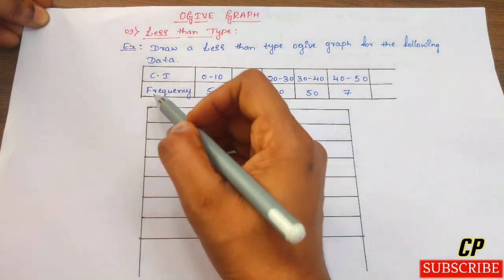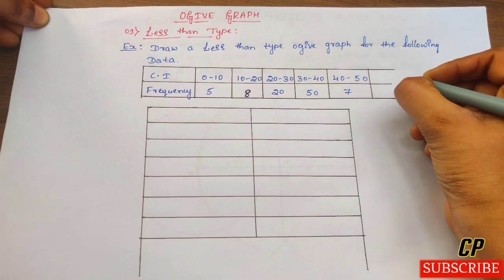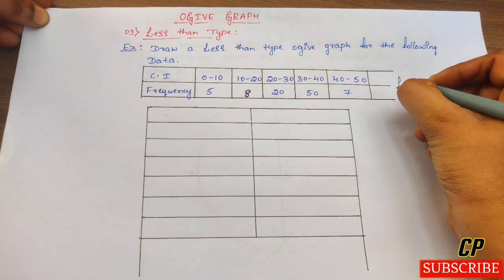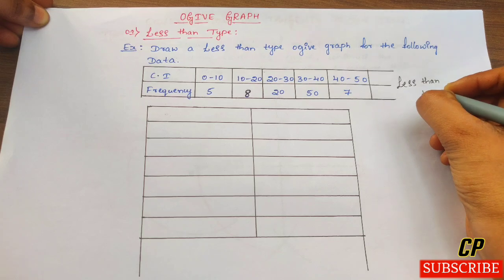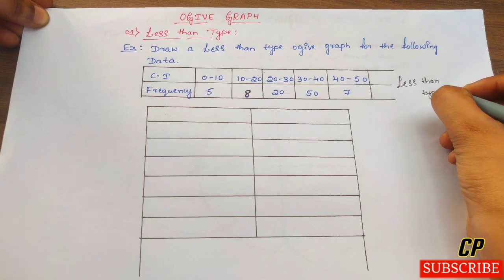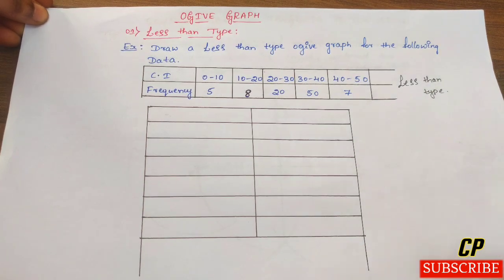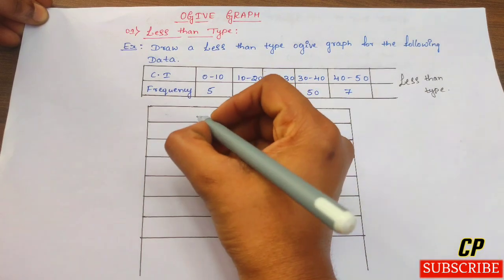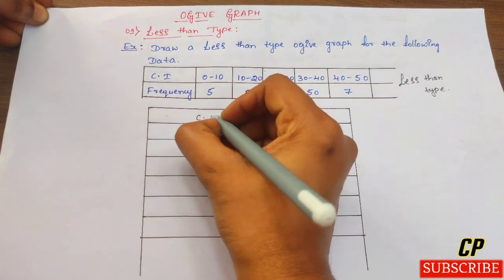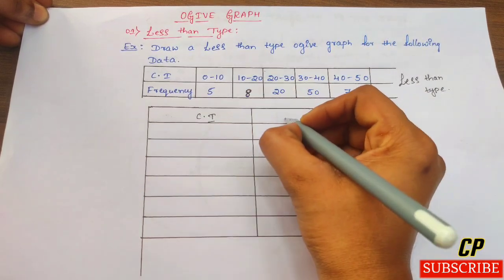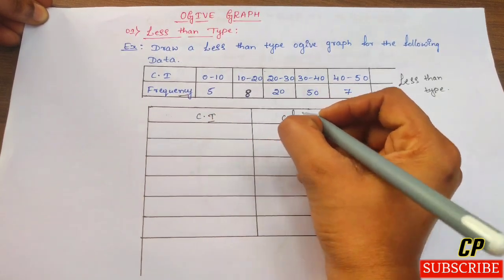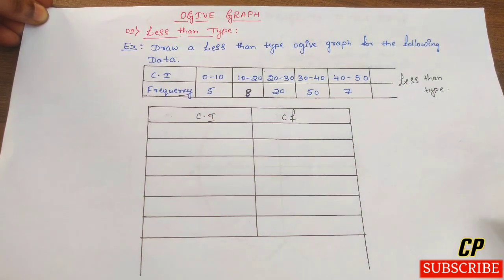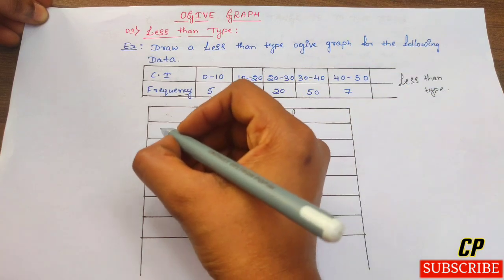We have to convert it into less than type. We convert the class intervals and calculate the cumulative frequency (CF) for the less than type Ogive graph.